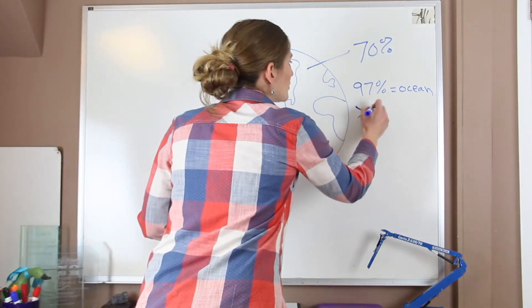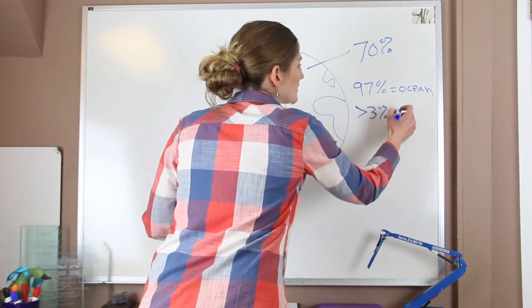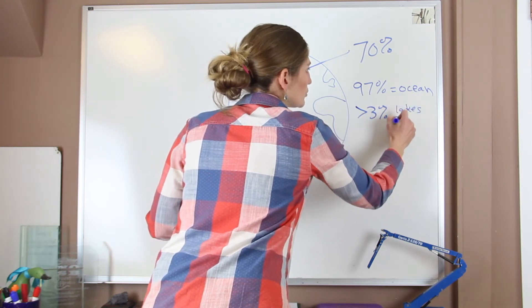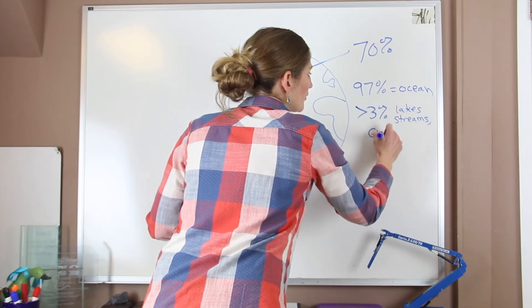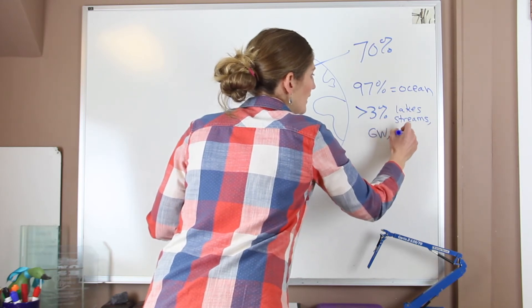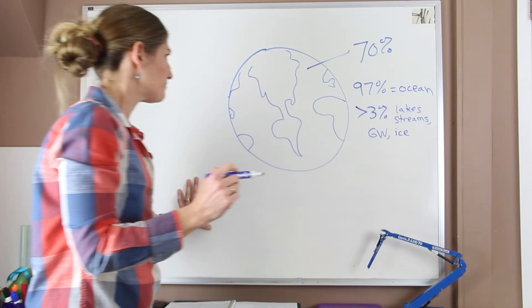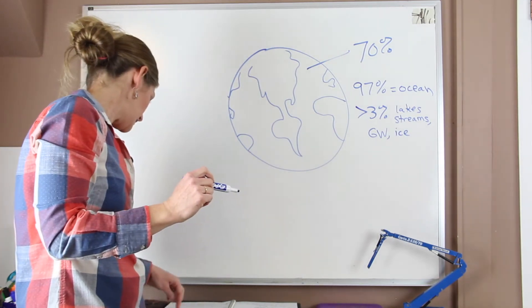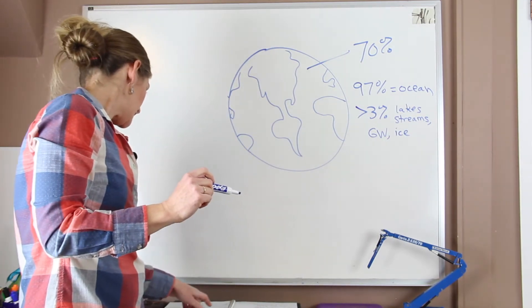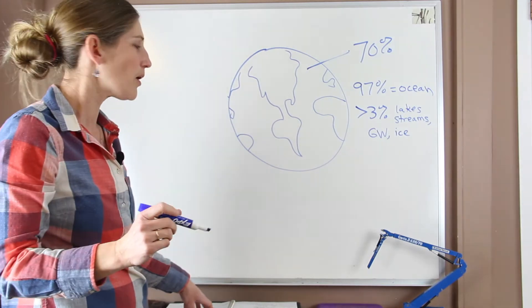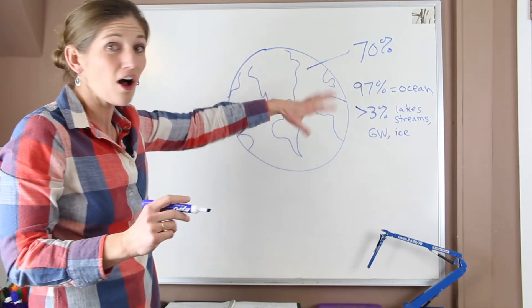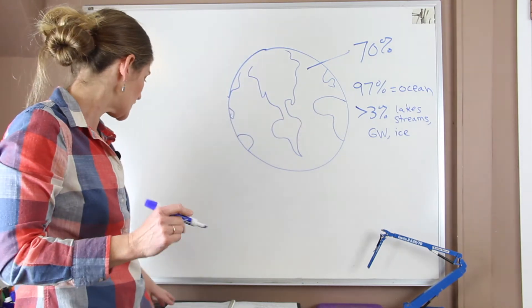Less than 3% is in our lakes, streams, I'm going to write GW for groundwater, our ice. Make sure I got all of it. Don't want to forget anything. Okay, so this is all the water that we find at the surface. Of all of that water, most of it's salty and it's in our oceans.